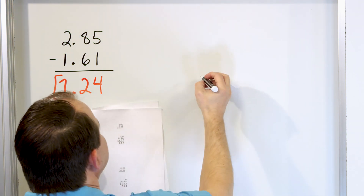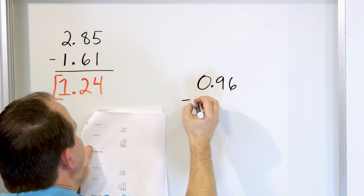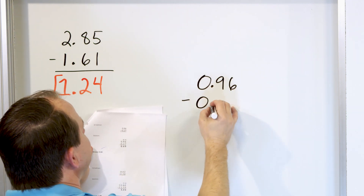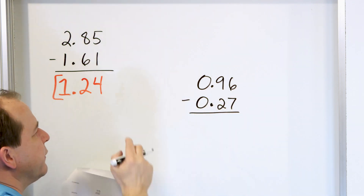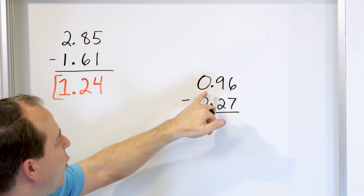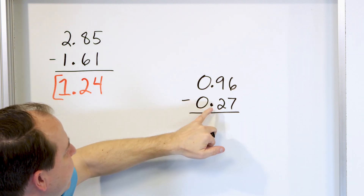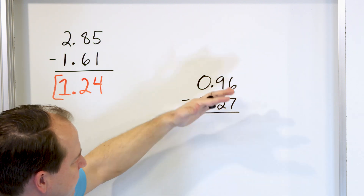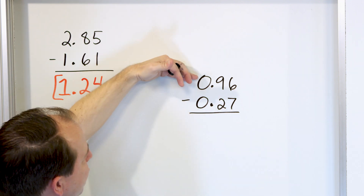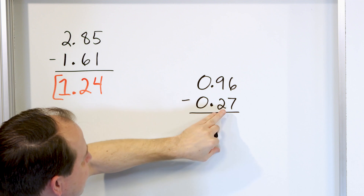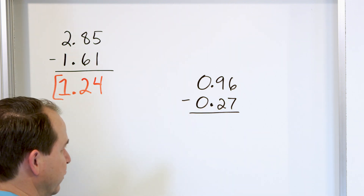Next problem. Let's take a look at 0.96, and we're going to subtract from that 0.27. Now, 0.96 is pretty close to 1 — 0.99 would be as close as you could get. 0.27 is much lower because 0.50 would be halfway. So this is almost to 1, and this is way less than half. So we're going to subtract these two numbers.